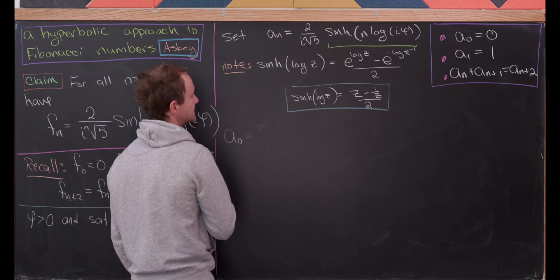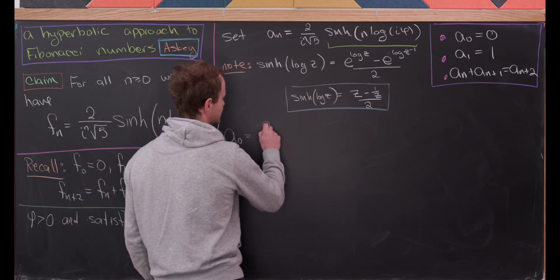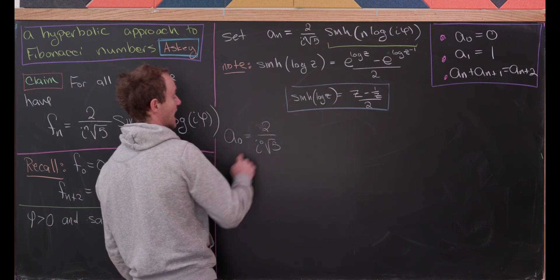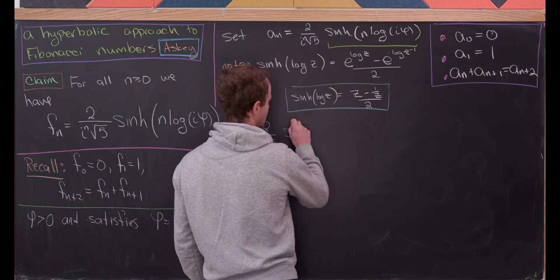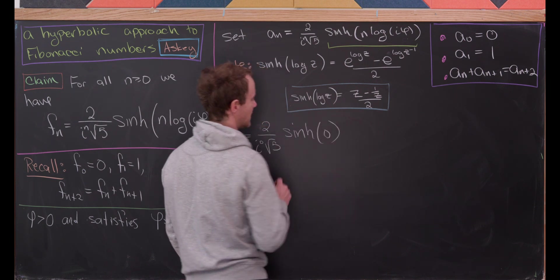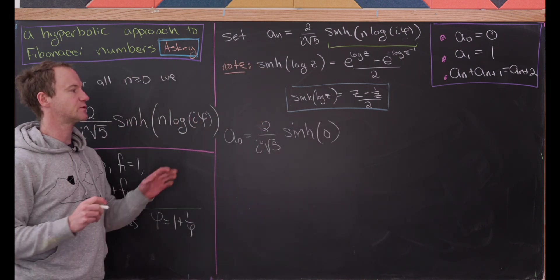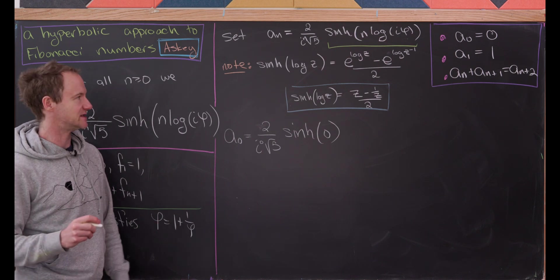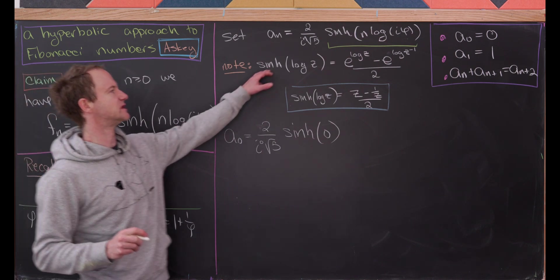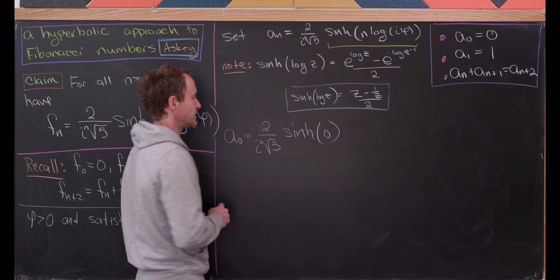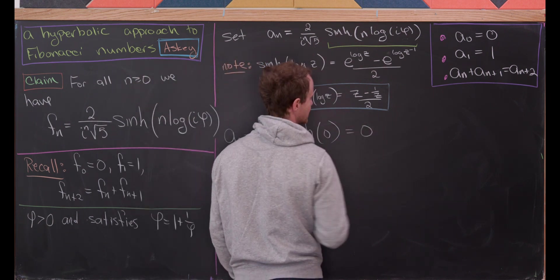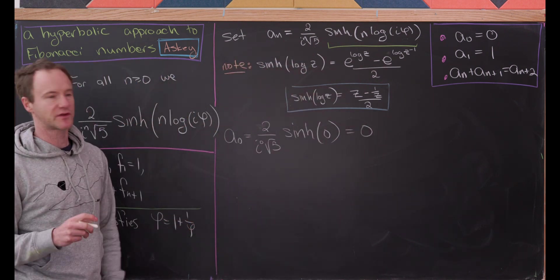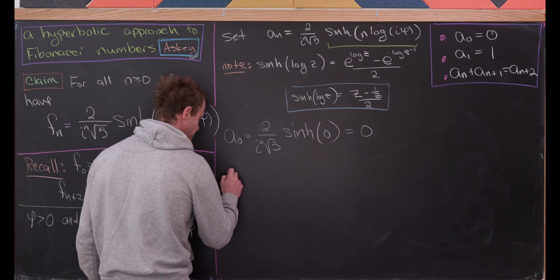Let's calculate A₀ using this rule. We have 2 over i to the 0 times the square root of 5, times the hyperbolic sine of 0. It's well known that the hyperbolic sine is 0 at 0, which you can verify from the formula. So we get 0. Our zero seed lines up.